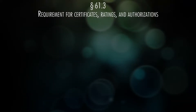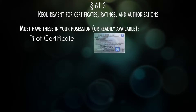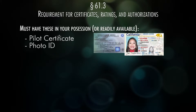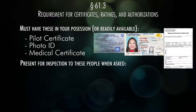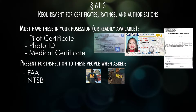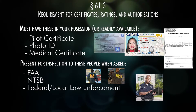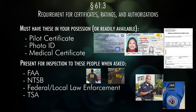Part 61.3 says that if you're operating an aircraft as a flight crew member, you need to have a pilot certificate, a photo ID, and a medical certificate in your possession or readily available to you. You also have to present it if requested by the FAA, the NTSB, a law enforcement officer, or TSA.